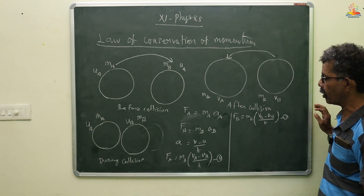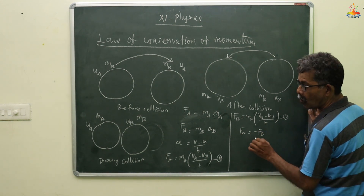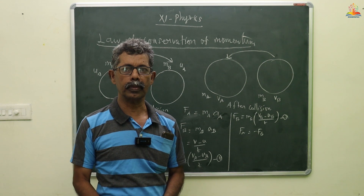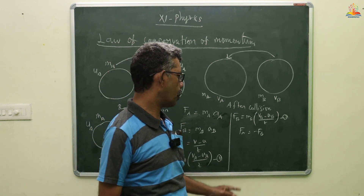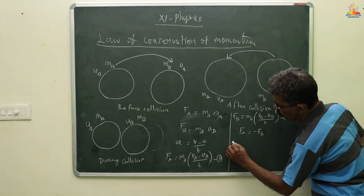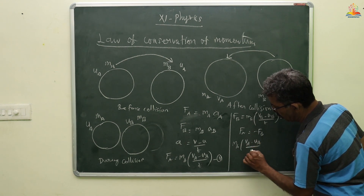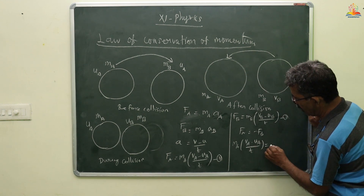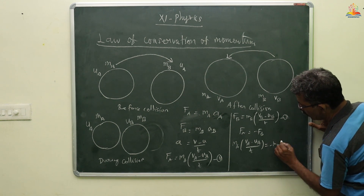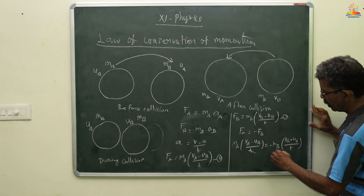According to Newton's third law, F_A equals minus F_B — for every action there is an equal and opposite reaction. So, M_A times (V_A minus U_A) divided by T equals minus M_B times (V_B minus U_B) divided by T. Since T appears on both sides, T cancels out.